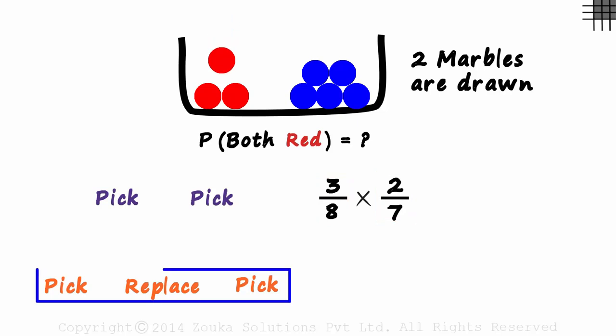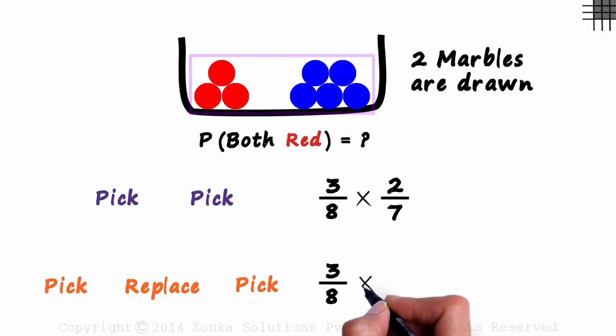Now let's move on to the second case of pick, replace, pick. What is the probability of picking a red marble first? Three red ones out of a total of eight, 3 over 8. Now that a red marble is put back in, what is the probability of picking a red marble again? It's the same. Three red marbles out of a total of eight marbles, 3 over 8.